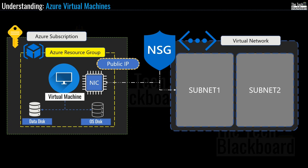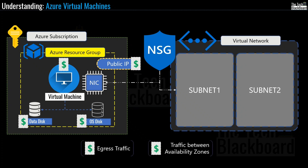So when creating virtual machines, many other Azure resources are created alongside — some implicitly, like the OS disk, and others explicitly, like the data disk and public IP. From a cost perspective: we pay for the virtual machine, the OS disk, and the data disk — these have a direct cost. We do not pay for virtual networks or virtual NIC directly, but we do pay for egress traffic going out of regions, or for communications between multiple availability zones. We also pay for the public IP.